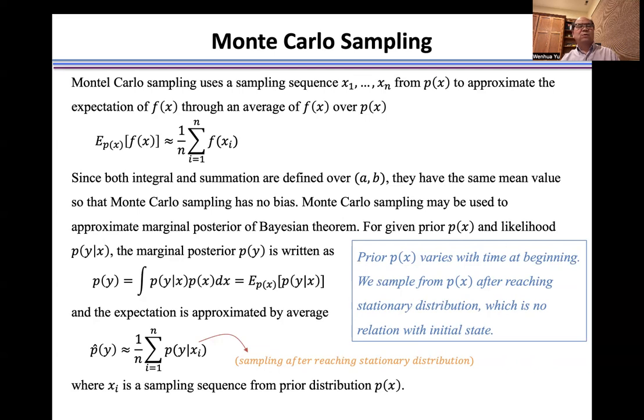Monte Carlo sampling may be used to approximate marginal posterior of Bayesian theorem. For given prior p(x) and likelihood p(y|x), the marginal posterior p(y) is written as this integral. Again, using the definition of expectation,